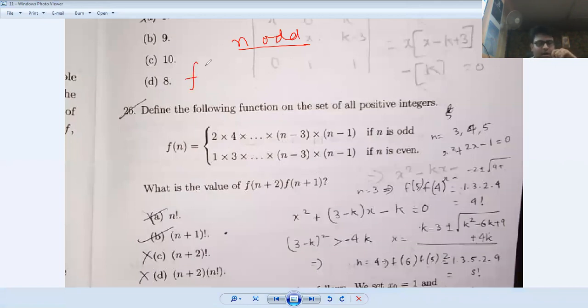f(n+2) will be equal to 1×3×5 up to n+1. And n+1 is even, so it will be 2×4×6 up till n. Now if I multiply both of them, I'll get 1×2×3×4×5×6...×n×(n+1).